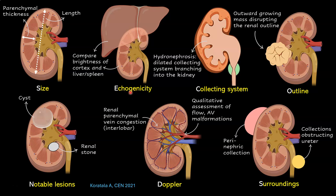E stands for echogenicity. As mentioned, the cortex of the kidney is hypoechoic or isoechoic compared to the adjacent liver or spleen. Cortical echogenicity increases in both acute kidney injury and chronic kidney disease. Only when increased echogenicity is combined with decreased kidney size can you think about chronic kidney disease; otherwise it could be acute kidney injury such as severe ATN or even glomerulonephritis.